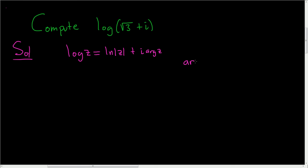And so here, by the argument of z, we mean theta plus 2k pi, where k is an integer.